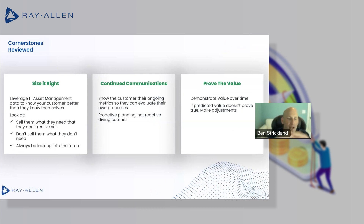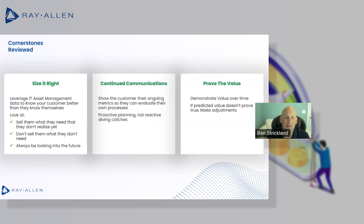In conclusion, everything here has really been talking about a couple of different areas and how we use asset management data to drive the customer conversation. First, make sure that you're sizing things right — that only comes from understanding both what customers are buying as well as what they are using, so that you sell them what they don't know they need yet. At the same time, you're not selling them things they don't need — you're helping them actually achieve their fundamental goals in ways they didn't even know they had problems.